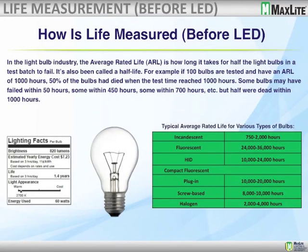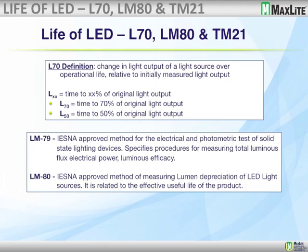Very quickly on the measurement of life: for all other light sources prior to LED, life was calculated by burning 100 lamps and noting the hour at which 50% had failed. So a 10,000-hour compact fluorescent lamp means approximately half will have failed at 10,000 hours. LM80 data is the raw data that third-party laboratories produce for manufacturers. We don't look at catalogs — we look at LM80 data. LM79 data is where we take those LM80-tested LED chips, design them into our luminaire with the driver, heat sinks, and optics, and send the finished luminaire to a third-party laboratory for LM79 testing.